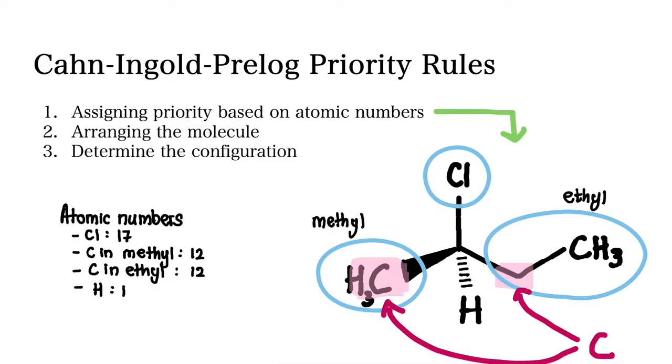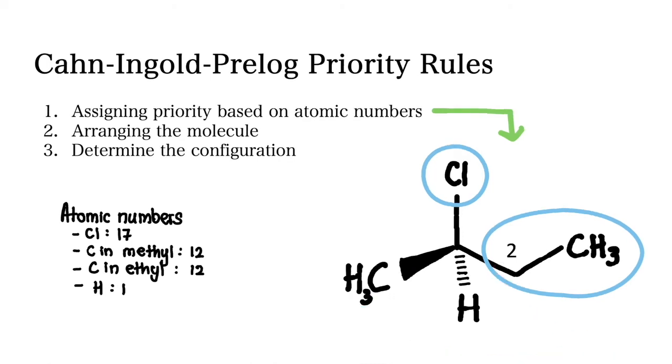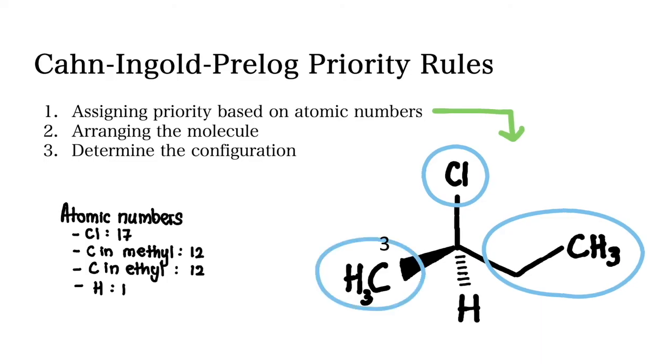The reason for this is that in ethyl, the carbon is connected to another carbon. So the ethyl group gets the priority of number two, and the methyl group gets the priority of number three.